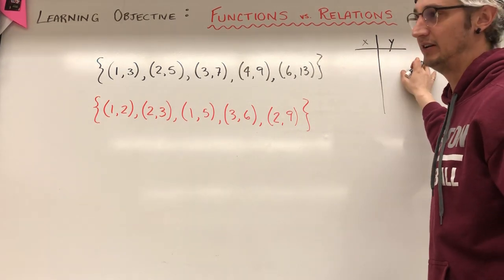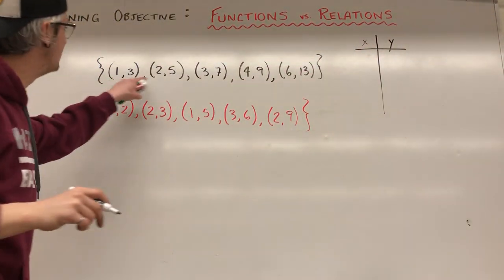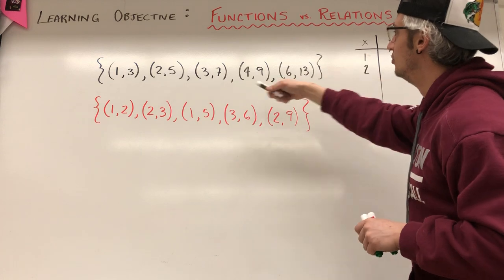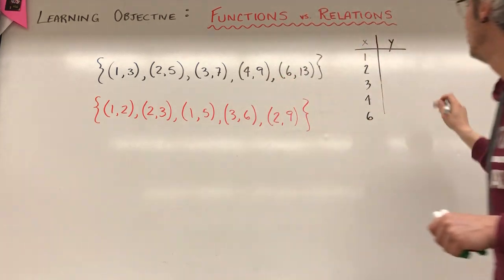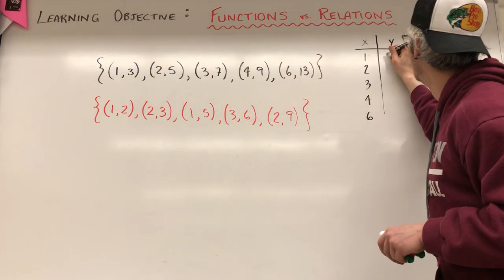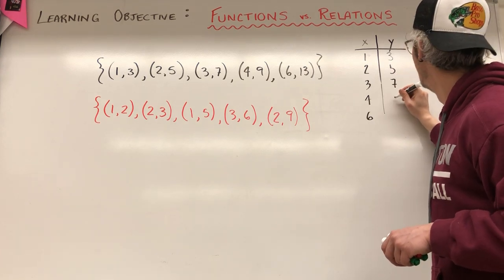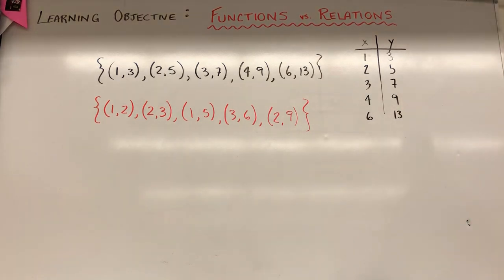I don't need to label this because it's an X and Y table. We just know it's input output. So I'm going to put all my inputs. Remember, all my inputs are going to be my X's are always my first data point in an ordered pair. So I'm going to put 1, 2, 3, 4, 6. Now, beside each data point, I'm going to put its Y. So when X is 1, Y is 3. At X is 2, Y is 5. At X is 3, Y is 7. At X is 4, Y is 9. And at X is 6, Y is 13. That's the first one.